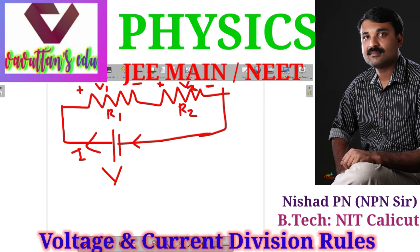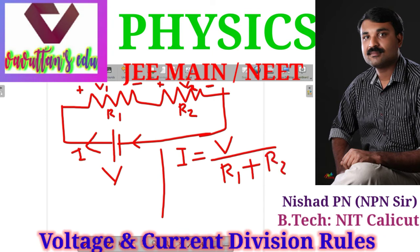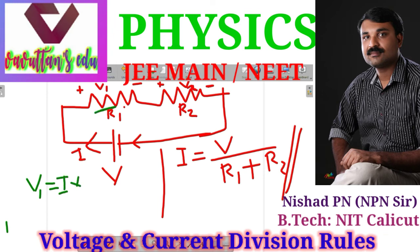What is the relationship between V1 and V2? The current I is equal to the voltage V divided by total resistance R1 plus R2. In a series connection, R1 and R2 carry the same current I. V1 is the current flowing through this resistance, that is I multiplied by resistance R1.